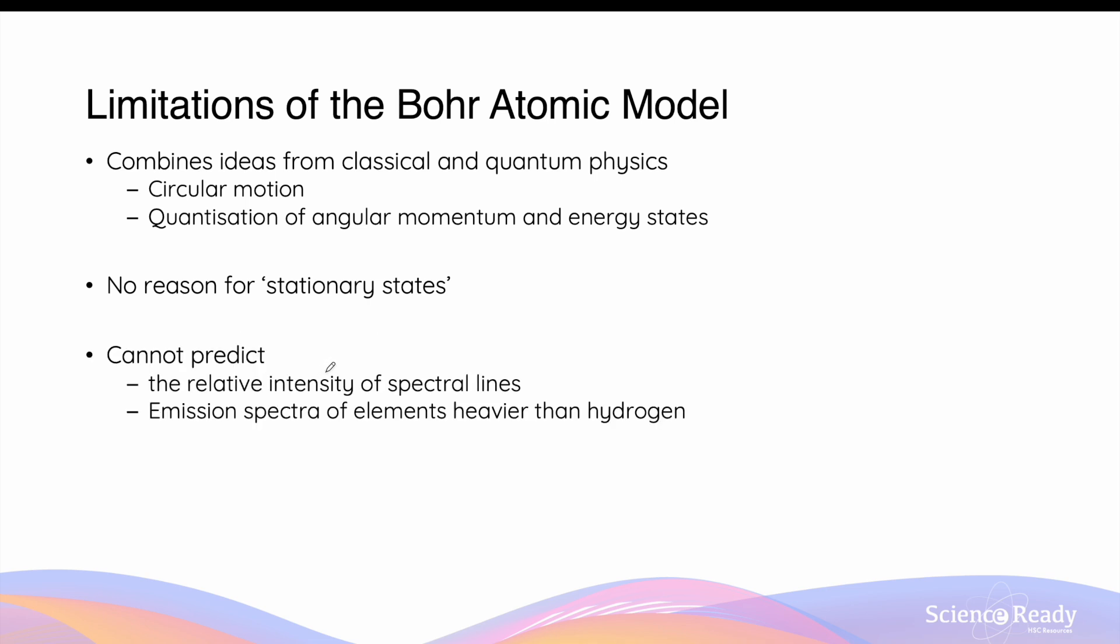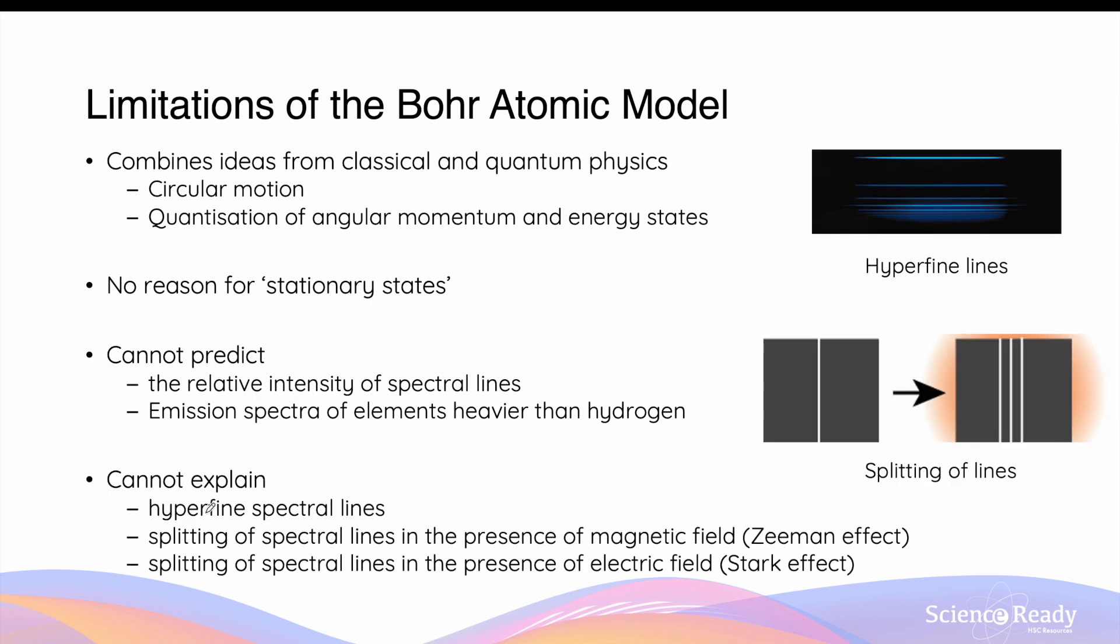Furthermore, Bohr's atomic model cannot predict the relative intensity of spectral lines seen in all elements, including hydrogen. Some of the emission lines are much brighter than the others. It also cannot predict the emission spectra of elements heavier than hydrogen, a similar limitation shared with Rydberg's equation. Bohr's atomic model cannot explain why each spectral line, when looked at a higher resolution, consists of several hyperfine spectral lines. It also cannot explain the splitting phenomenon of each spectral line when an element is in the presence of either a magnetic field or an electric field. The splitting due to the magnetic field is known as Zeeman's effect, and the splitting due to an electric field is called the Stark effect. This concludes the video on Bohr's atomic model.